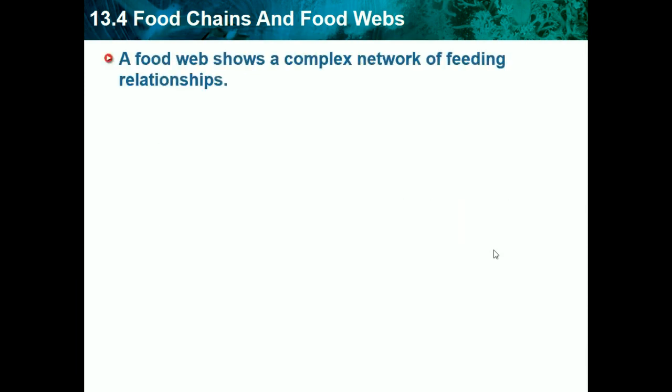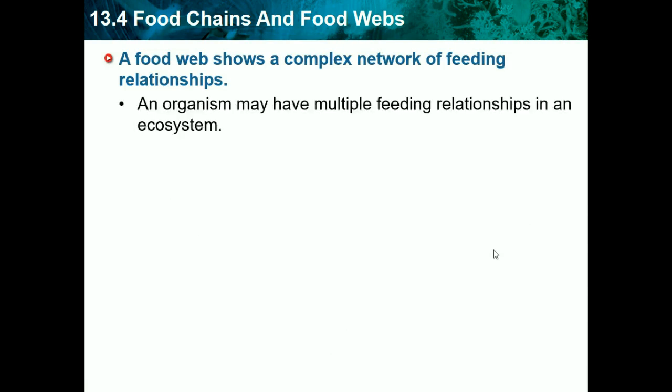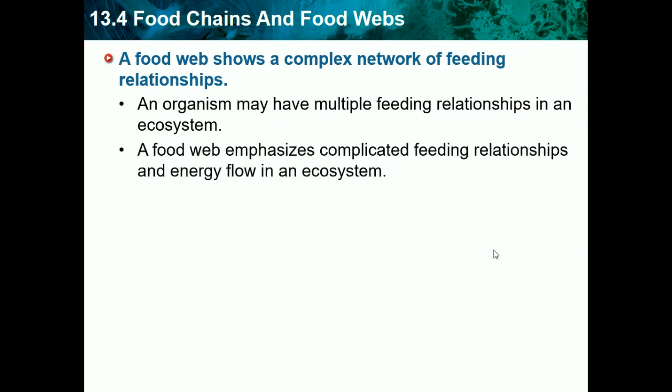A food web shows a complex network of feeding relationships — webs are pretty complex. An organism may have multiple feeding relationships in an ecosystem; not every organism eats only one certain thing — everything interacts. A food web emphasizes complicated feeding relationships and energy flows in an ecosystem, showing energy transformations as something eats and gains energy.